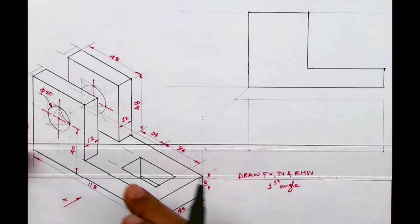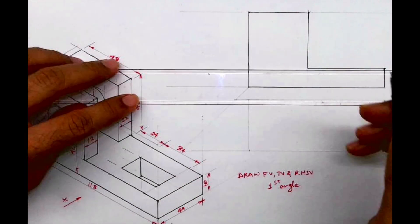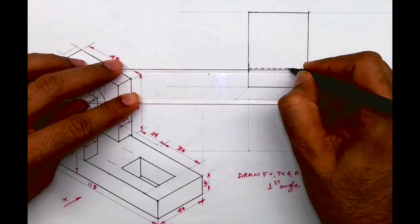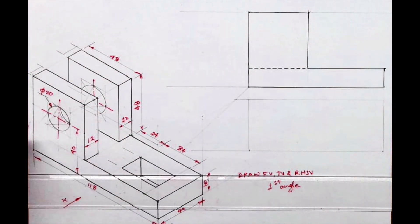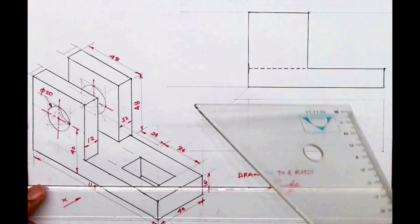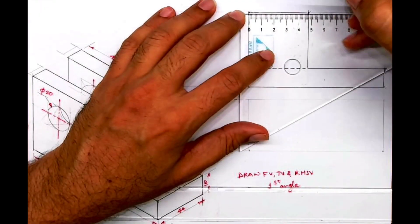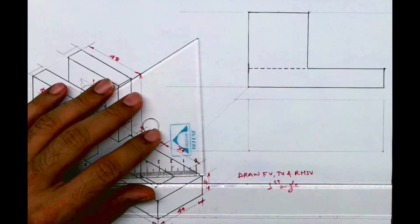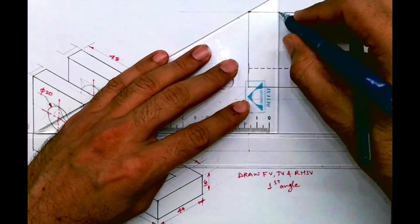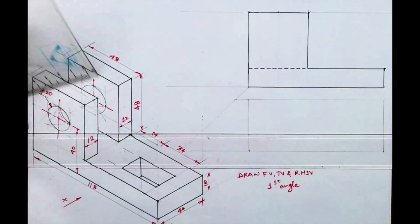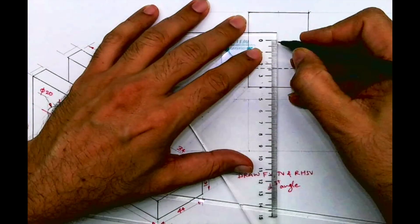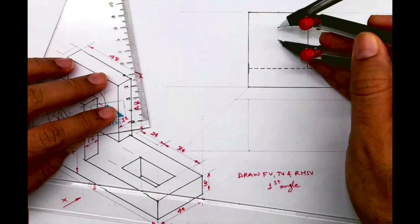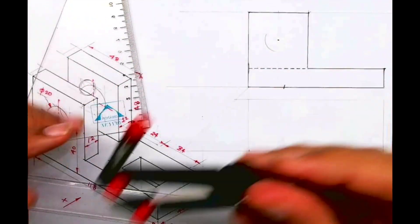So this is the front view. Now this part you can't see, so that will be dotted. Then for this circle, we'll take the midpoint. This is 48, so we'll take half - 24 - and draw a vertical line. From the bottom we'll go up by 40. From here we'll draw radius 10.